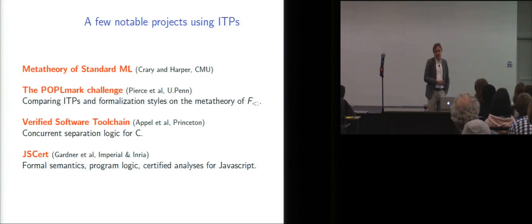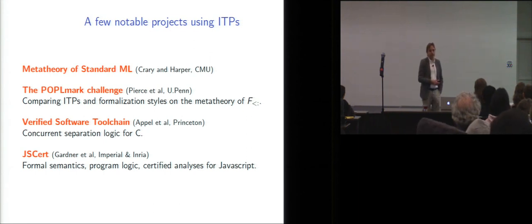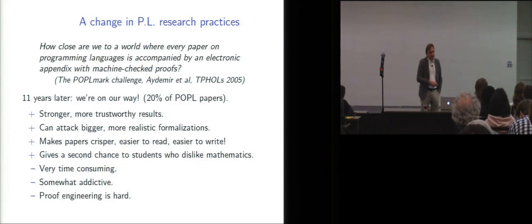The verified software tool chain at Princeton is a great example of a program logic. It's a concurrent separation logic for C that is embedded and usable from within the Coq proof assistant. And then I should mention the heroic efforts at Imperial and INRIA to formalize JavaScript and develop program logics and certified analysis for it. OK, but I think this also goes with a change in programming language research practices.